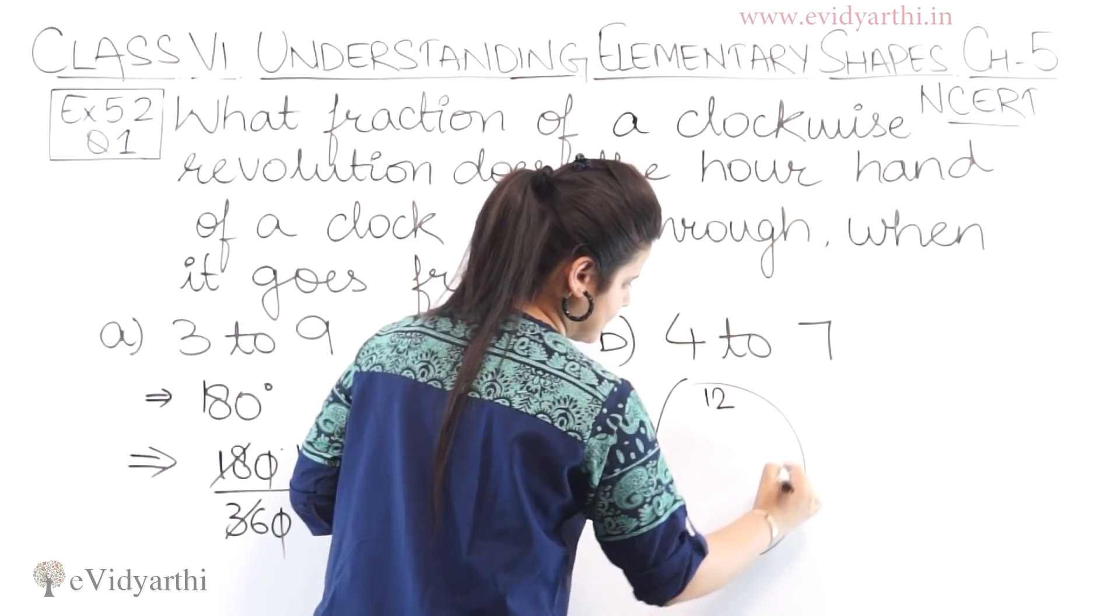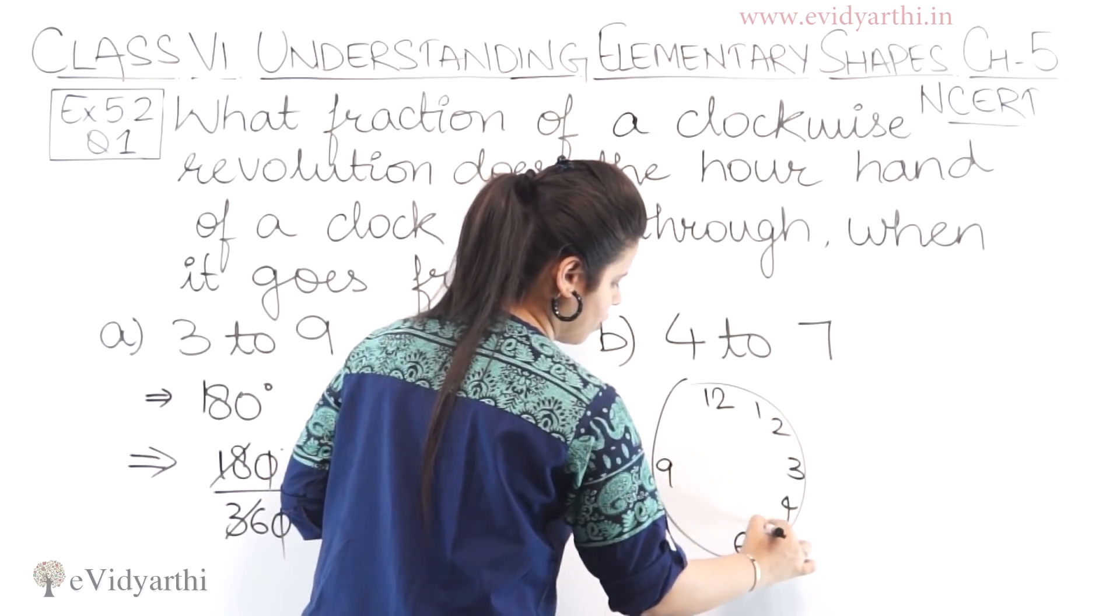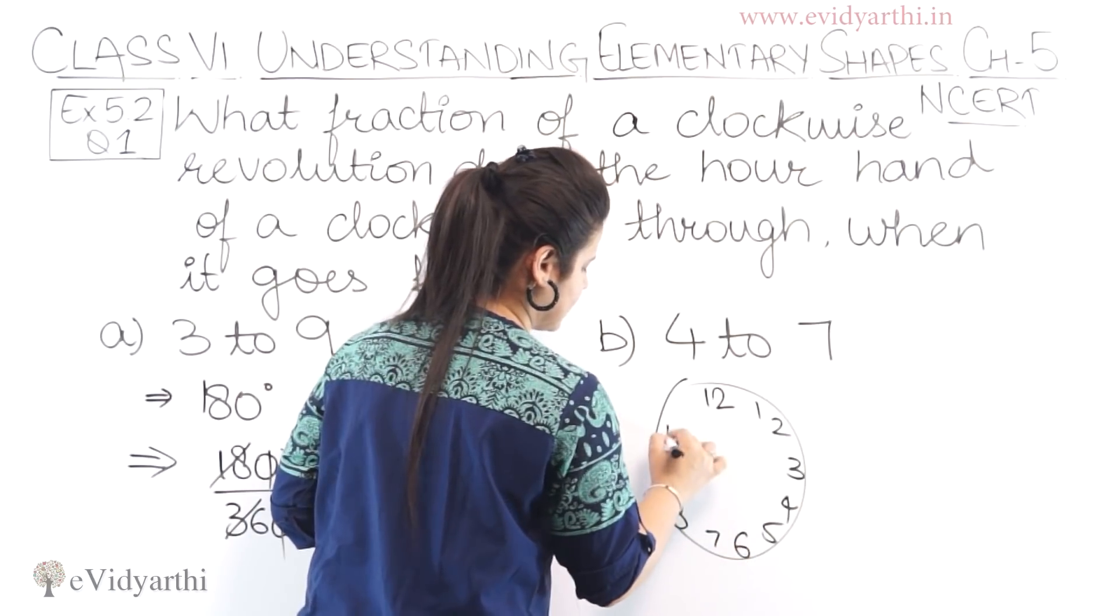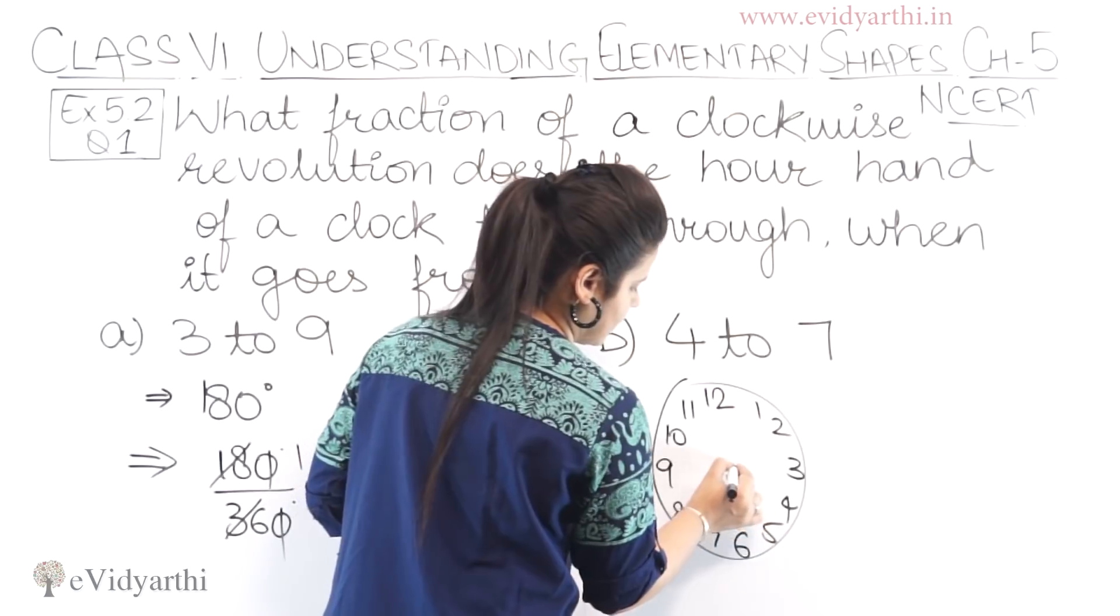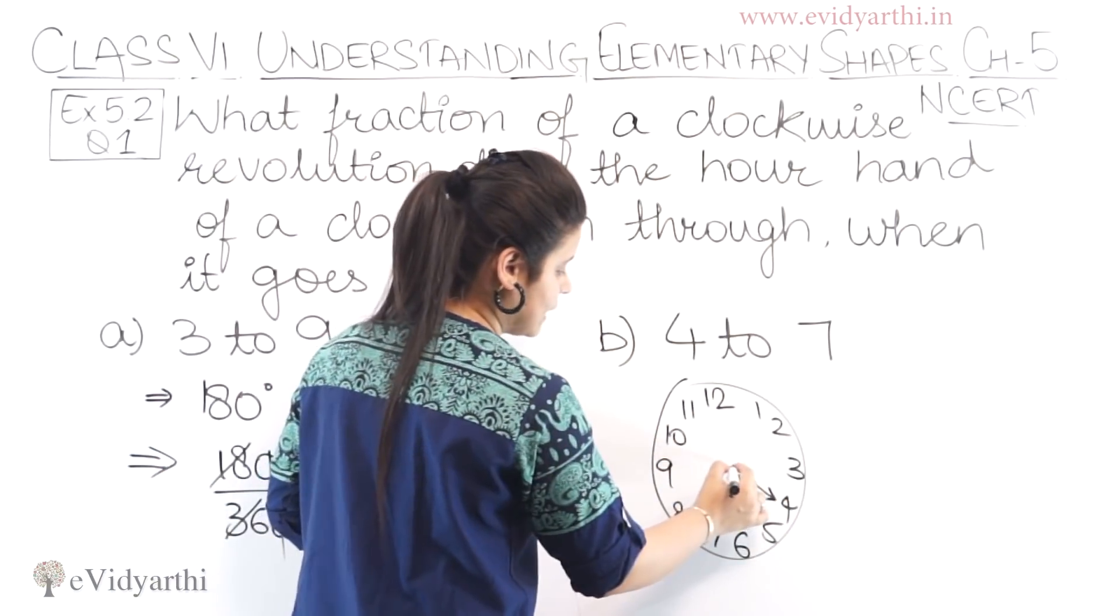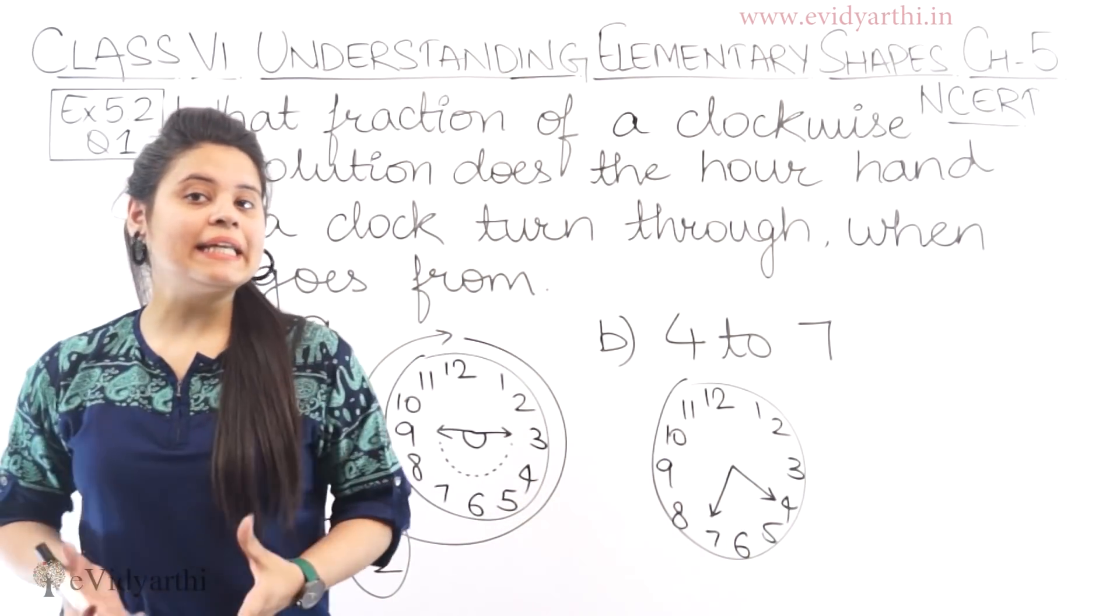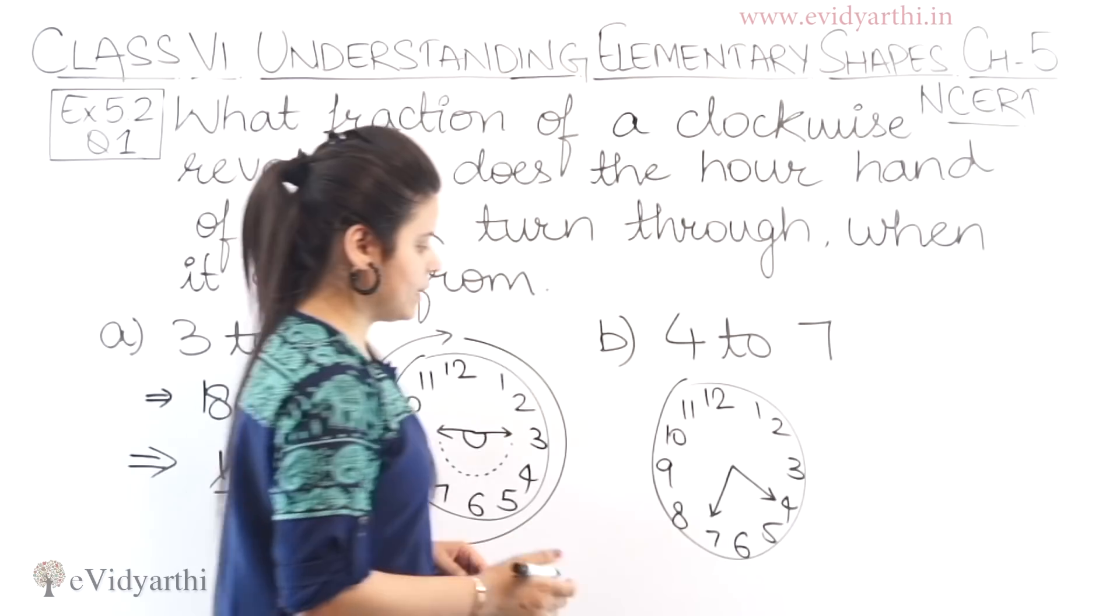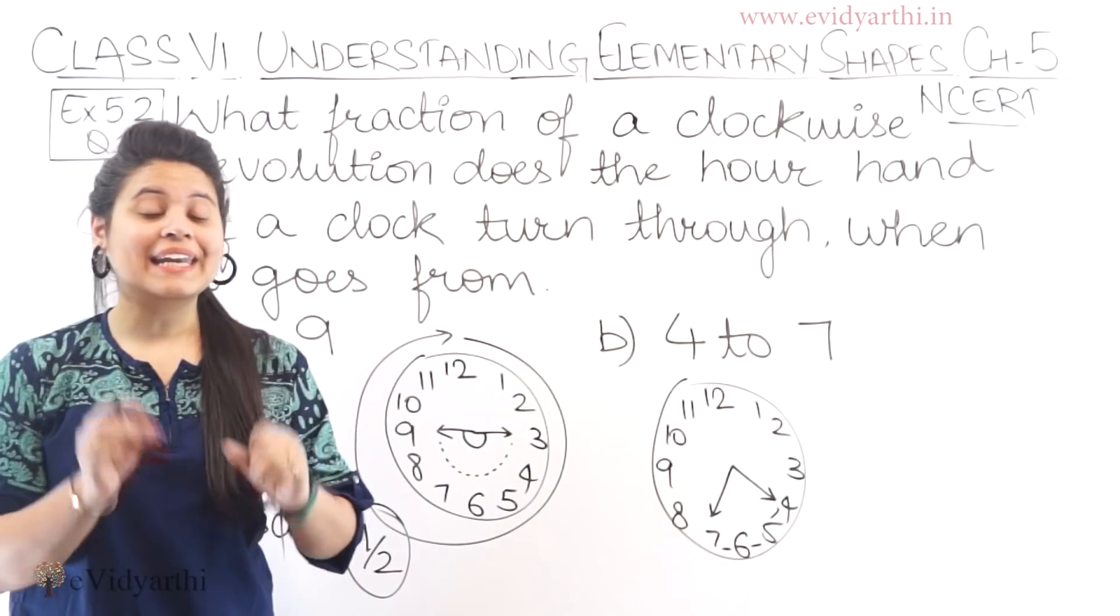This will be 12, 6, 3, 9, 1, 2, 4, 5, 7, 8, 10, 11. Okay? Now, 4 to 7. From here to 7. 7 is here. So, this will be 90 degree.